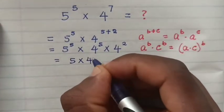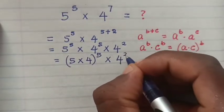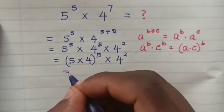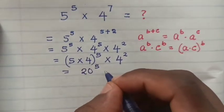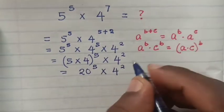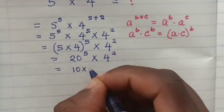So here, it will be (5×4)^5 × 4^2. 5 times 4 is 20, so it will be 20^5 × 4^2.